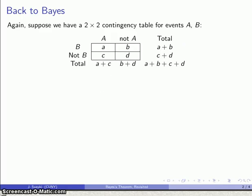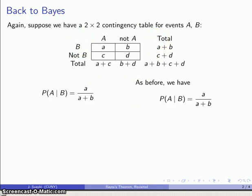Okay, let's talk a little bit more about Bayes' theorem. So again, we can get back to Bayes, and we're going to start off with our 2x2 contingency table, and again, we have various probabilities.